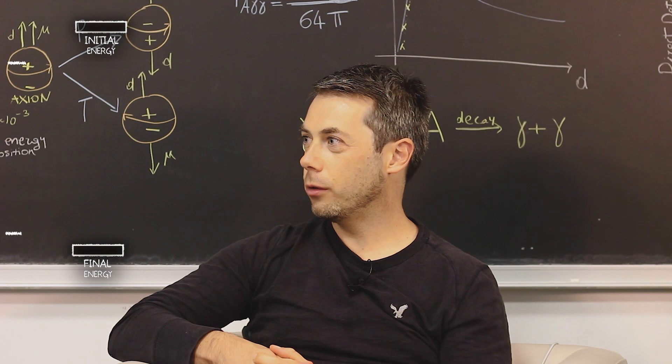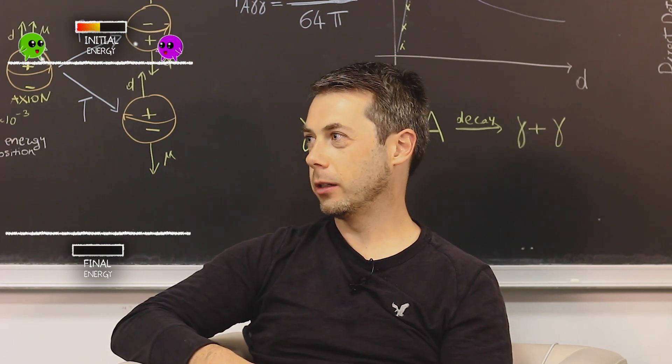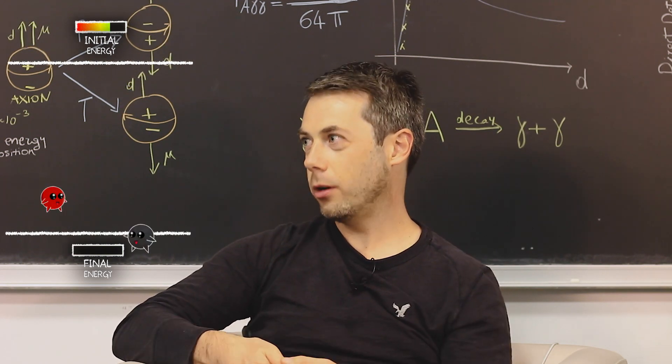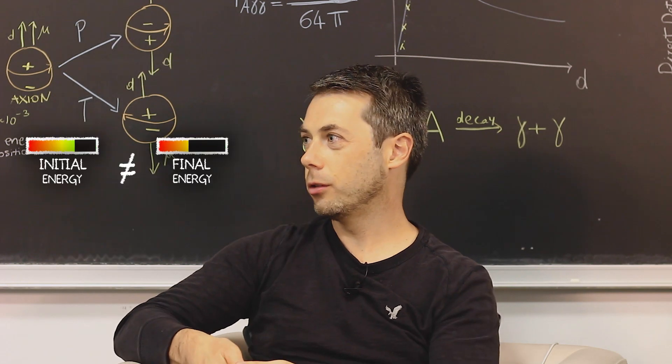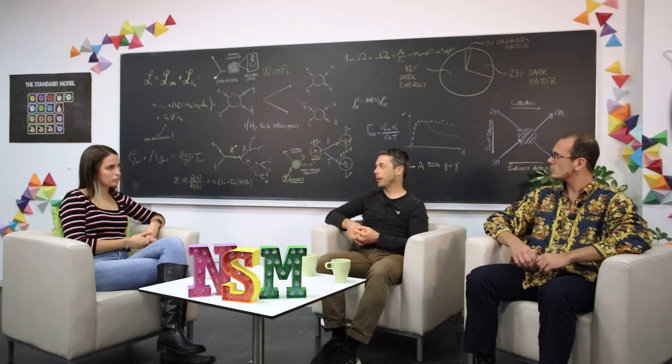And this doesn't seem to happen for dark matter production, because simply the detector wouldn't see these elusive particles. So the energy before the collision and after the collision would be different. And this indicates the production of dark matter.